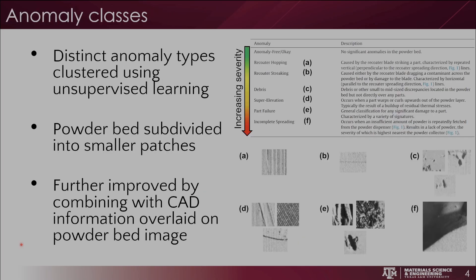There are multiple different anomaly classes that can be detected for laser powder bed fusion. The key is that each anomaly needs to be distinct from each other and identifiable visually. The table on the top right shows six anomalies along with anomaly-free that are captured in this paper, with increasing severity as the table goes down.